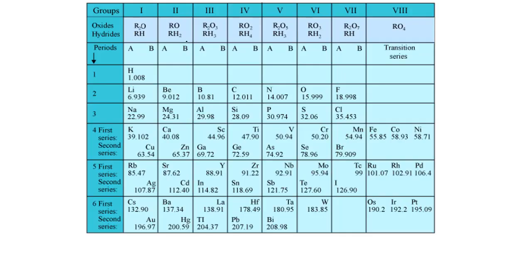When the Mendeleev classification was given, at that time 63 elements were known to the scientist. He studied all the elements. One by one he started studying all the elements. He studied the atomic masses. First of all, the main thing he studied was the atomic masses. He also studied the physical and chemical properties.